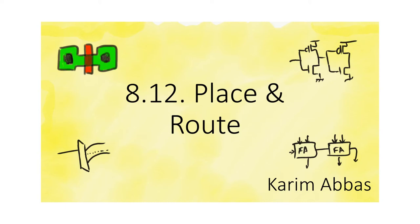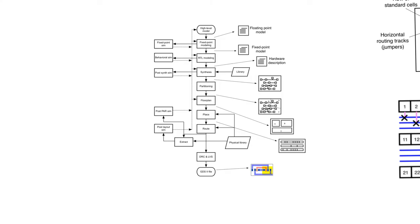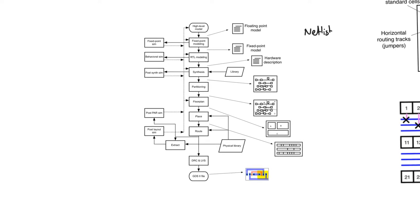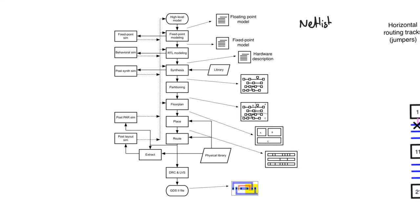The heart of creating a layout for fabrication is placement and routing. It is the most critical and most complicated step in the design flow. After synthesis we have a netlist — a VHDL file that consists of structural connections of standard cells from the standard cell library.